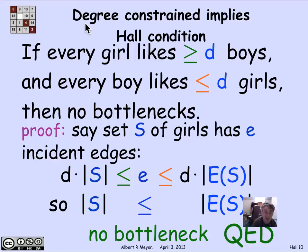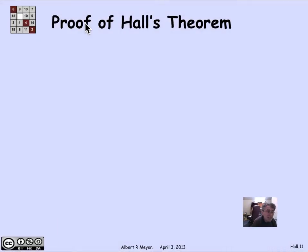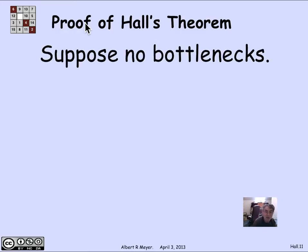By Hall's theorem, the degree-constrained condition is sufficient to guarantee that there is a match. There are many graphs with matches that are not degree-constrained — this is not an if-and-only-if theorem; it's just a sufficient condition that comes up often enough to be worth mentioning. Degree-constrained implies Hall's condition is satisfied, which implies there's a perfect match. Let's turn now to the general case of Hall's theorem. The strategy for proving it is basically to break the problem of finding a match for a large set of vertices into problems of finding matches for smaller sets, and use strong induction.